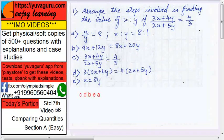First is given. What is given? 3x plus 4y upon 2x plus 5y equals to 4 upon 3. This is first, so c will be the first. Second, what will you do? You will cross multiply this, right?